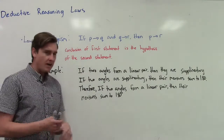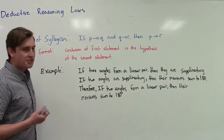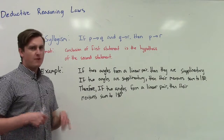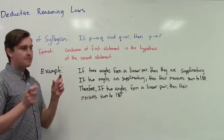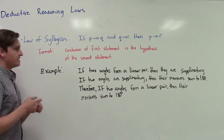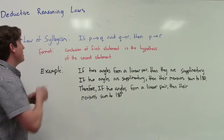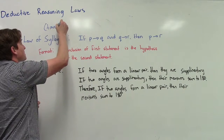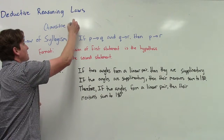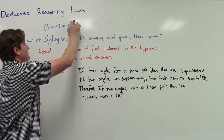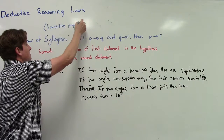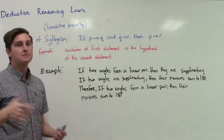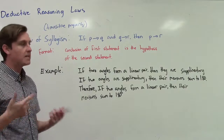This should look familiar because it's essentially the transitive property of equality but in statement form. When you think of the law of syllogism, think of the transitive property. The transitive property says: if a equals b and b equals c, then a equals c.